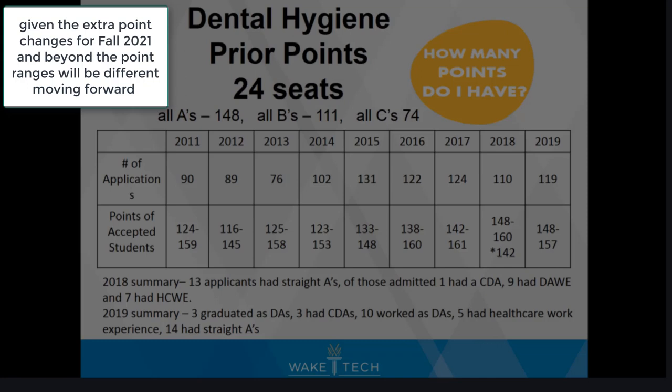The prior points slides illustrate point ranges for the past nine years for both dental hygiene and dental assisting. For dental hygiene, the applicant class of 2018 had 13 applicants with straight A's; of those admitted, one had a CDA, nine had dental assistant work experience, and seven had healthcare work experience. For the class of 2019, three graduated as DAs, three had CDAs, ten worked as dental assistants, five had healthcare work experience, and 14 applicants had straight A's.